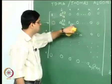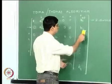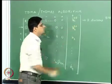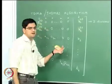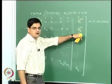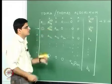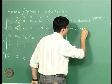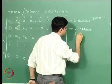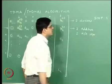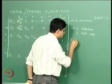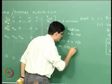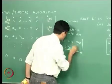None of these numbers change; they remain as they are. B2 gets changed to B2_1, where B2_1 is nothing but B2 minus A21 multiplied by B1_1, which involves one addition/subtraction and one multiplication/division step. So Step 1 involves two addition/subtraction steps plus four multiplication/division steps in total.